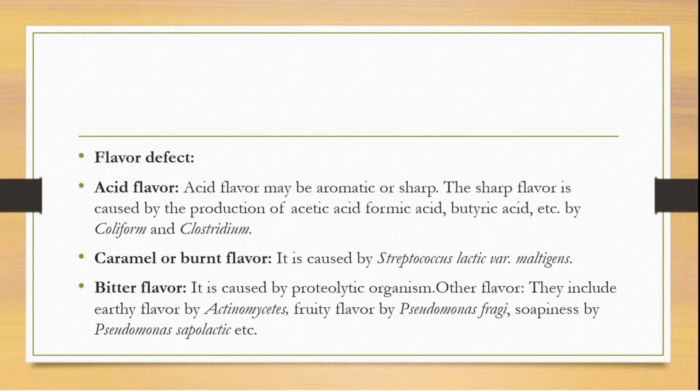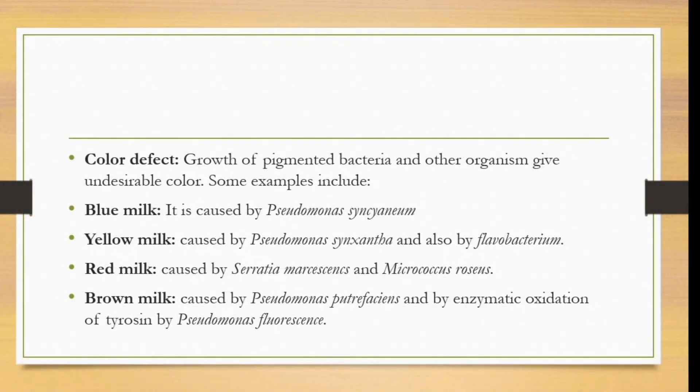Color defects — growth of pigmented bacteria and other organisms give undesirable color. Examples include: blue milk, caused by Pseudomonas syncyaneum; yellow milk, caused by Pseudomonas syncyanthum and Flavobacterium; red milk, caused by Serratia marcescens and Micrococcus roseus; brown milk, caused by Pseudomonas putrefaciens and by enzymatic oxidation of tyrosine by Pseudomonas fluorescens.